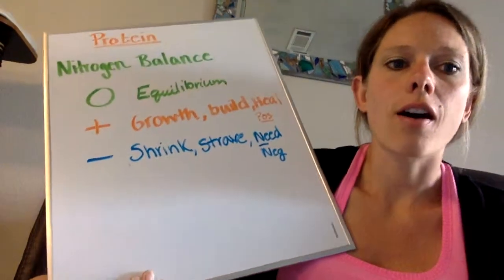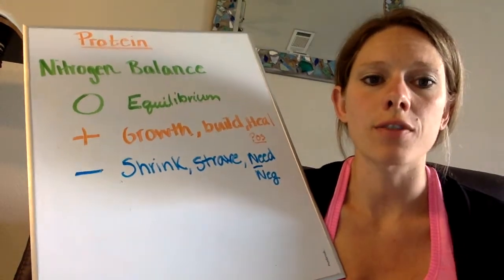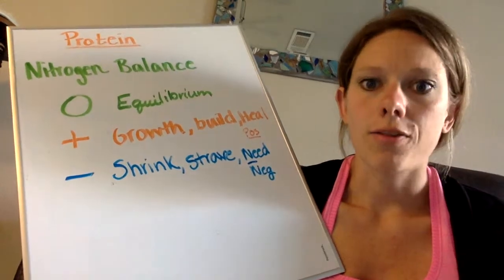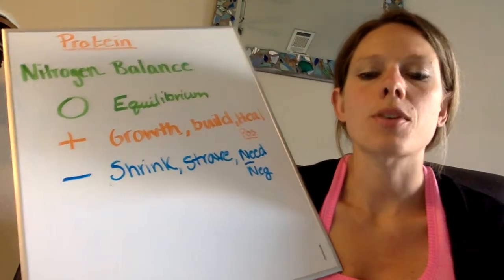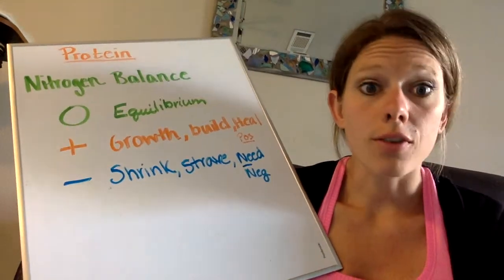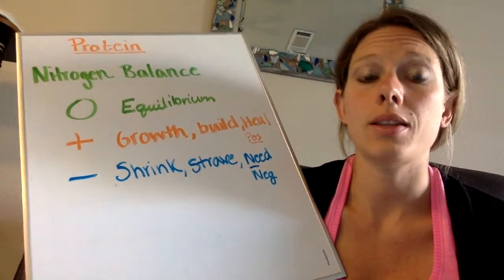Our negative, I like to think of shrinking, starving, there's a need, and that's negative. So negative nitrogen balance examples might be somebody who has inadequate intake. So they might be starving, you maybe have a cancer patient who is